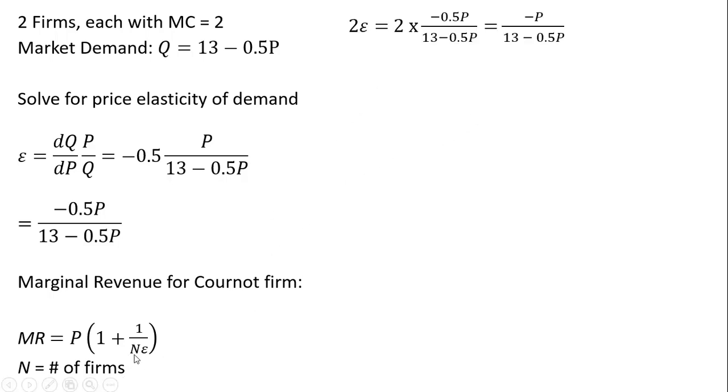So I'm going to calculate 2 times the price elasticity of demand. I have the price elasticity of demand here, and I'm just going to multiply it by 2. This 2 times minus 0.5 is just minus 1. So we get minus 1P over the following.